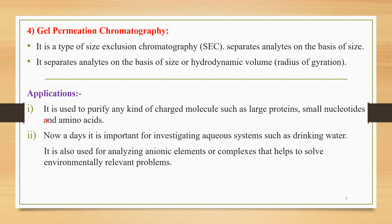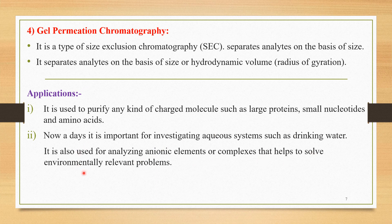The applications of gel permeation chromatography include purification of large biomolecules such as proteins, nucleotides, and amino acids. It is also important for investigating aqueous systems such as drinking water and for analyzing anionic elements or complexes that help solve environmentally relevant problems. This is one important type of chromatography — gel permeation chromatography.